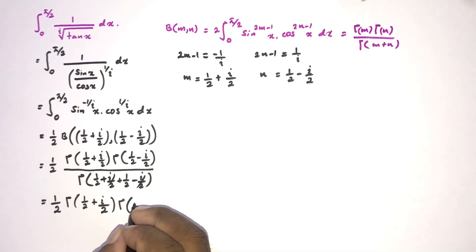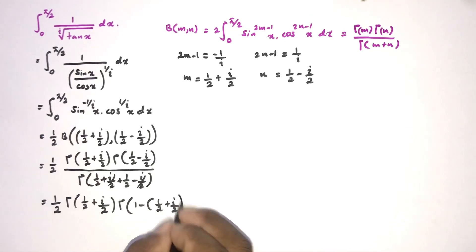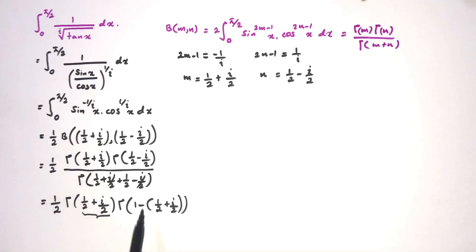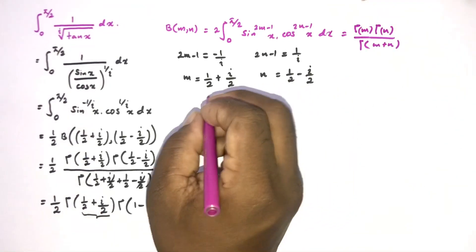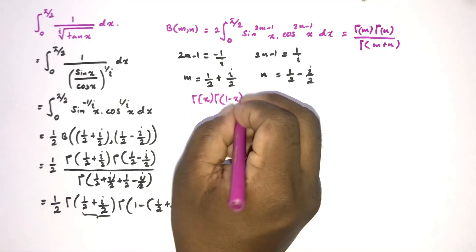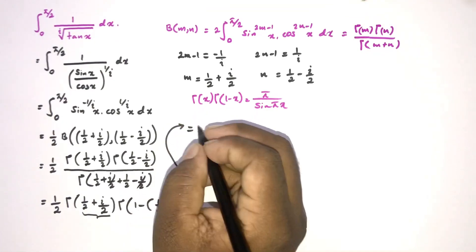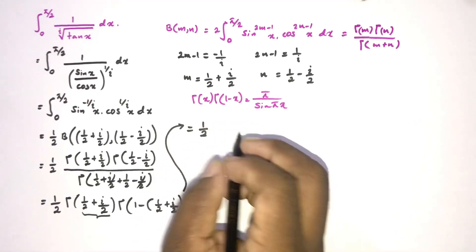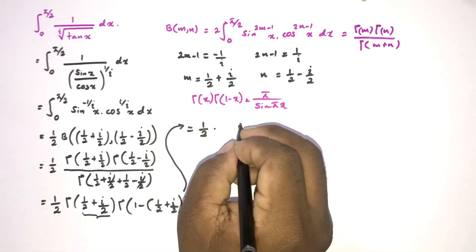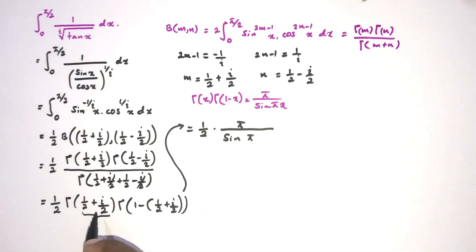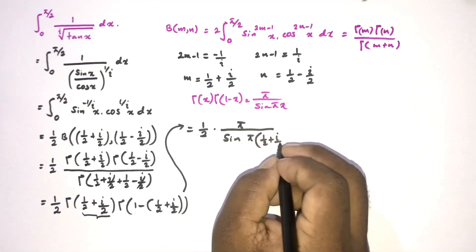So we rearrange to get gamma(1 half plus i over 2) times gamma(1 minus (1 half plus i over 2)), which has the form gamma(x) times gamma(1 minus x). We know Euler's reflection formula: gamma(x) times gamma(1 minus x) equals pi over sine(pi x). So with x equal to 1 half plus i over 2, we get pi over sine of pi times (1 half plus i over 2).